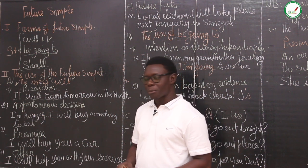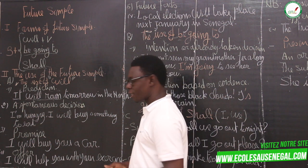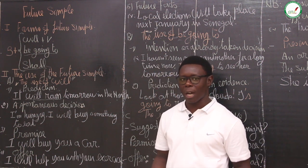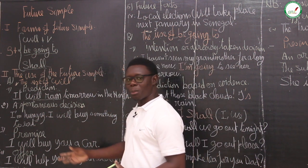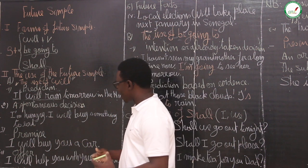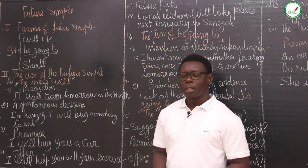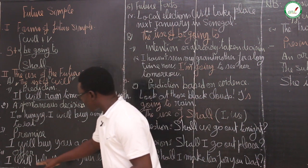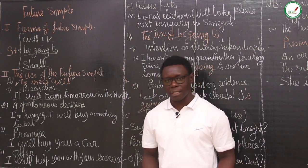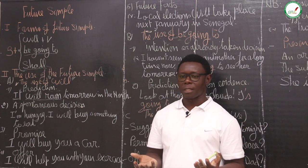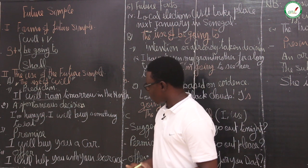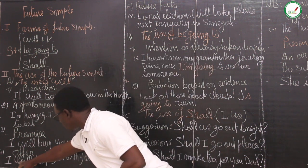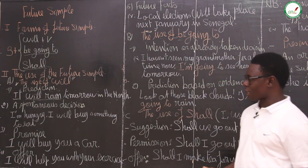We can also use the future simple to make a promise — to promise something to someone. Example: 'I will buy you a car. I promise.' This is my promise to you. Maybe you work hard or you do something that pleases me and I decide to buy a car for you. You can also use the future simple to make an offer or to propose your help to somebody. Example: 'I will help you with your exercise.' This means I make an offer to help you do your exercise.